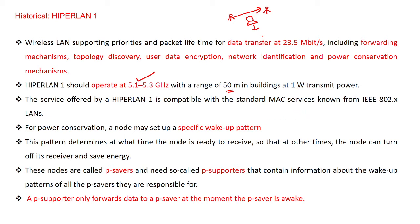HiperLAN 1 is compatible with standard MAC services such as IEEE 802.x LANs. It includes a power save mode: if a node is not in use, it enters idle mode, which is referred to as P-saver mode. P-savers save energy — a pattern determines when the node is ready to receive, so other nodes can turn off their receivers to save energy. P-supporters contain information about the wake-up patterns of P-savers, and a P-supporter only forwards data to a P-saver when the P-saver is awake.